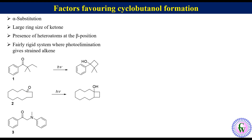Compound 3 has nitrogen as a heteroatom at the beta position. So cyclization between the gamma carbon and carbonyl carbon will be favored to produce an azetidine derivative.